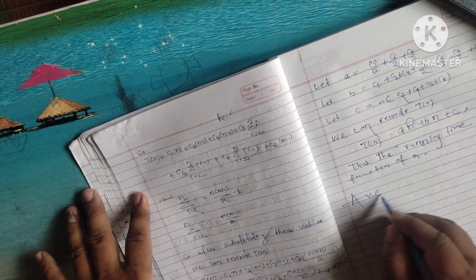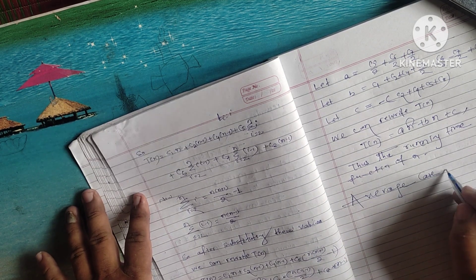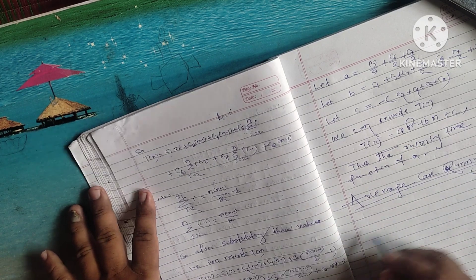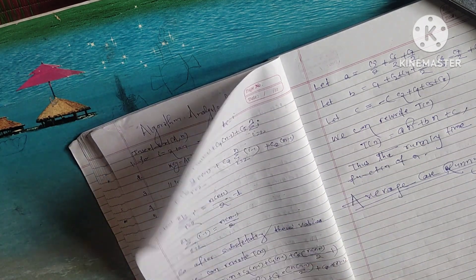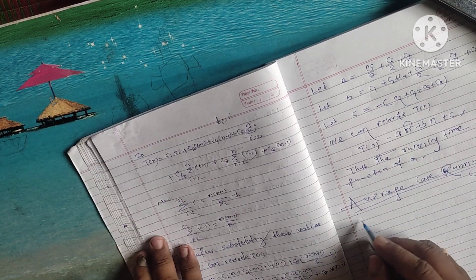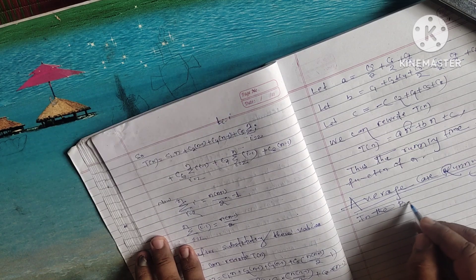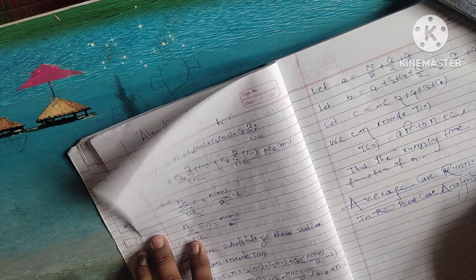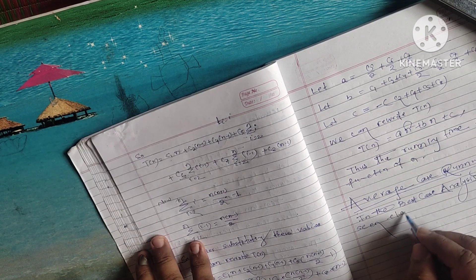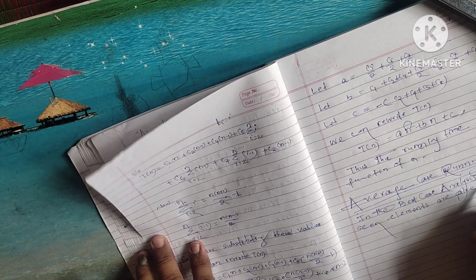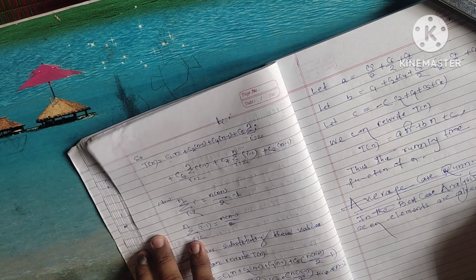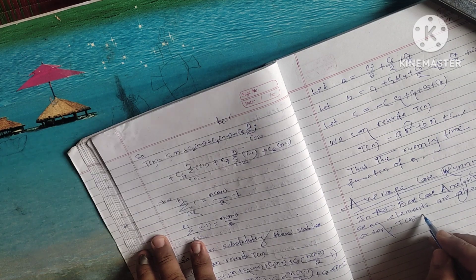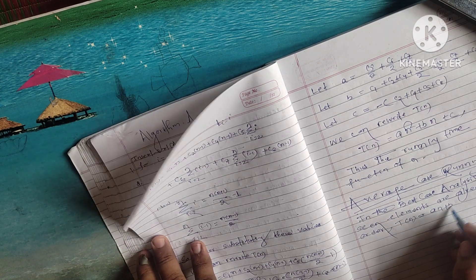Now let us discuss the average case running time. In the best case analysis, we have seen that elements are already in sorted order and T(n) is a linear function of n.